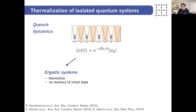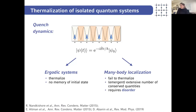There are two extreme limits: ergodic dynamics, where the system thermalizes and there is no memory of the initial state — for instance, for a charged density wave of period two where every other site is occupied by a fermion, if the system thermalizes we expect this amplitude to be completely washed out. And on the other extreme, if we add disorder, there are many-body localized regimes where the system fails to thermalize and we can measure a memory of the initial state.